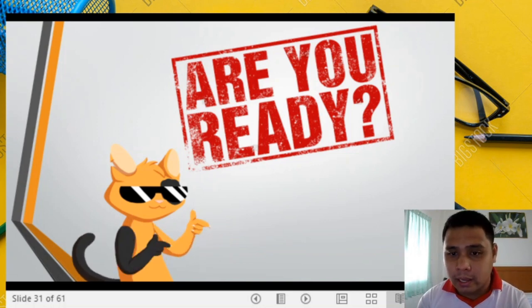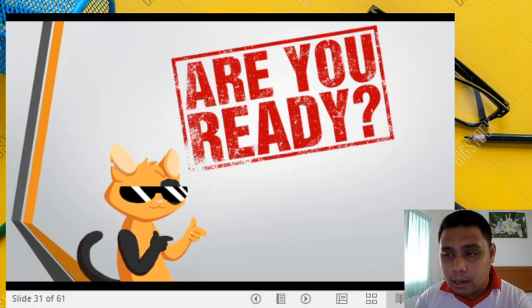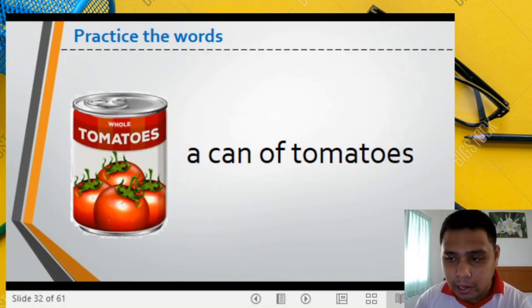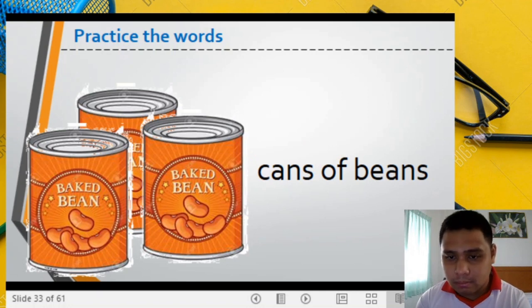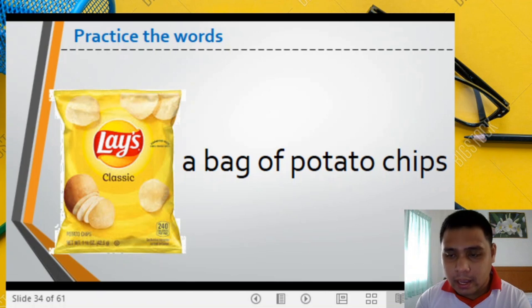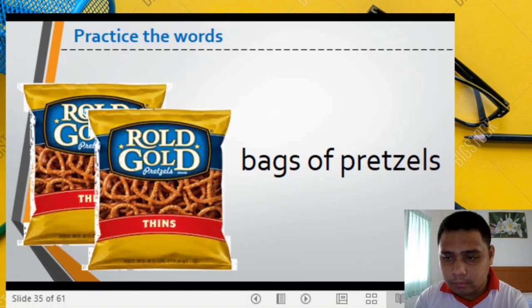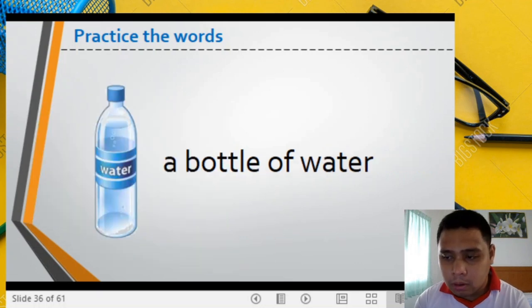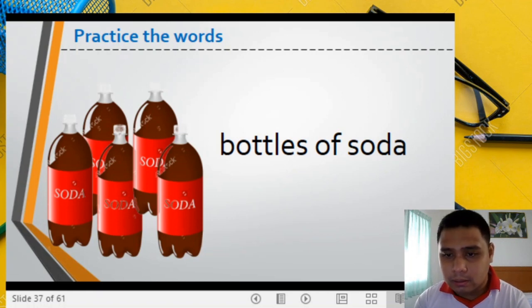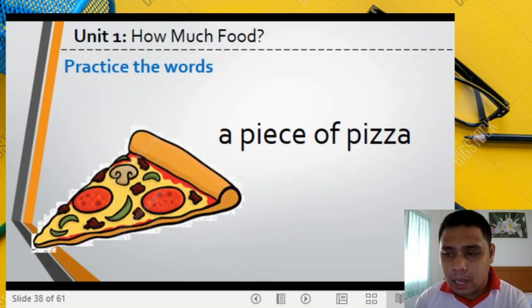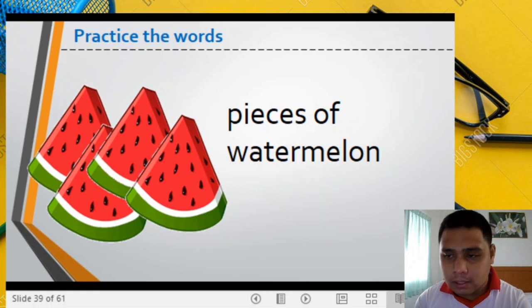Let's start. Please prepare your eyes, ears, and mouth — read after me. A can of tomatoes. Cans of beans. A bag of potato chips. Bags of pretzels. A bottle of water. Bottles of soda. A piece of pizza. Pieces of watermelon.